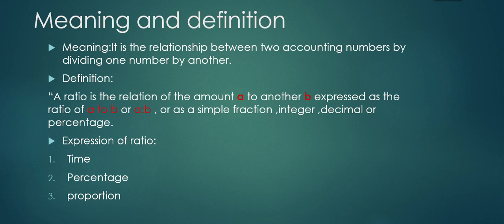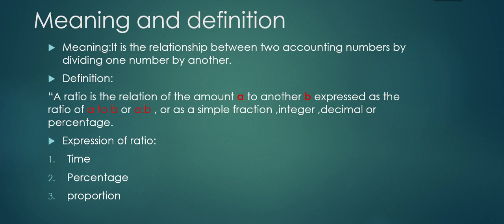Ratio analysis is basically applied by different companies to the financial statements prepared by the companies, in order to analyze whether the company is going on a success, failure, or what is the progress of the business. It concentrates more on the interrelationship among the figures given in your financial statements. A ratio is the relationship between two accounting numbers that is derived from your financial statements by dividing one number by the other.